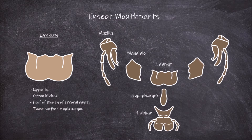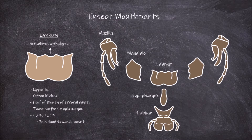The inner surface, also known as the ventral surface of the labrum, is called the epipharynx. The labrum articulates with the clypeus section of the head. The function of the labrum is in helping pull food towards the mouth and hold it in position whilst the insect is feeding.